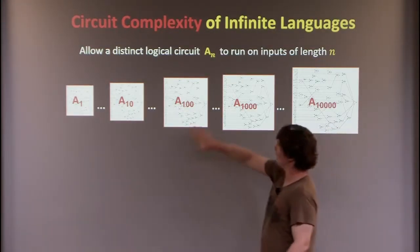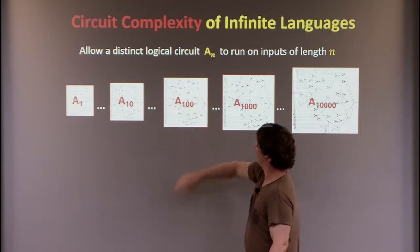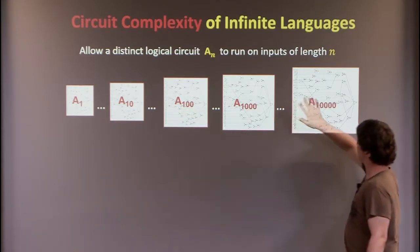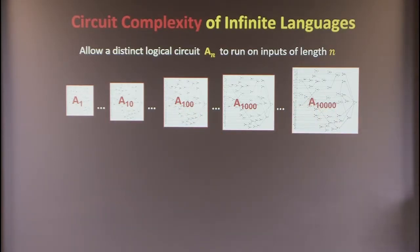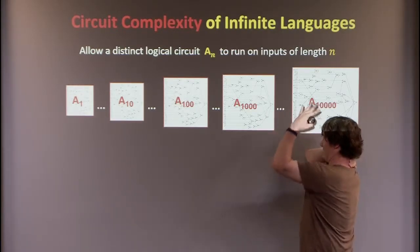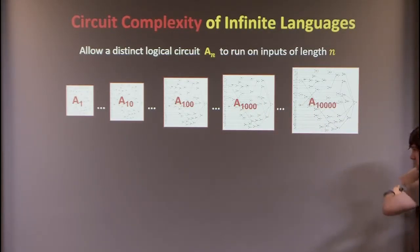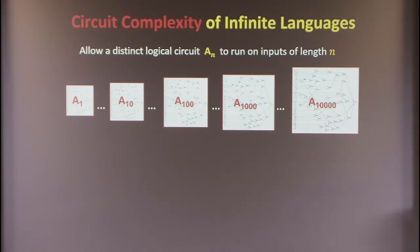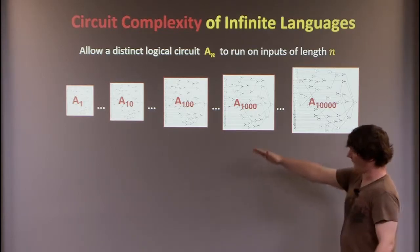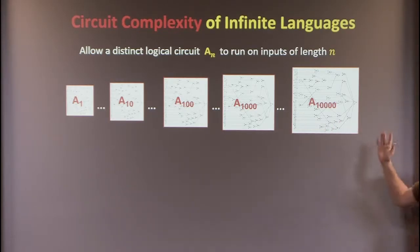So one circuit for inputs of length 100, one for inputs of length 10,000, and so on. When I get an input of a certain length n, I feed it to C_n and it gives me the answer. This way I can talk about an infinite circuit family computing an infinite language.